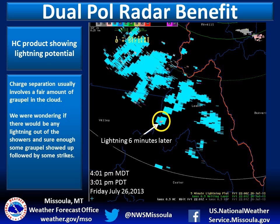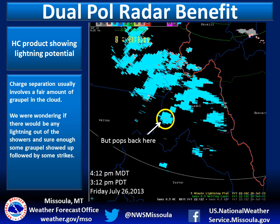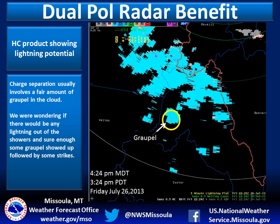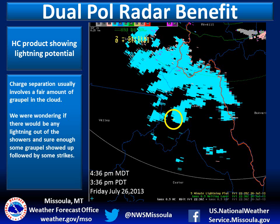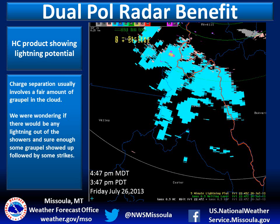Graupel is not stationary in a cloud — it's constantly moving up and down between the updraft and downdraft, so it could be above or below this radar slice. The graupel pops back here. The thunderstorm cells are moving over mountainous terrain, so they're being enhanced by the extra lift. We have more lightning with that cell. Still continuing to track this thunderstorm cell and it's showing some graupel. No graupel here, but there could be some graupel above or below the layer. About six minutes later, another lightning strike is reported.